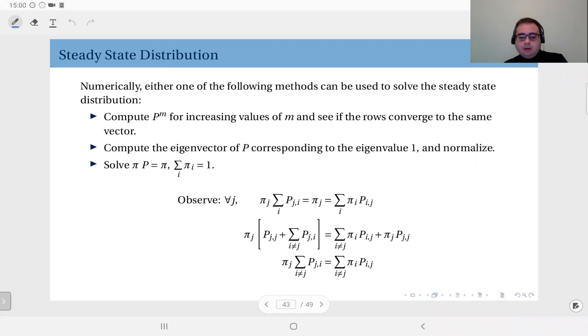If your Markov chain is ergodic, all rows should converge to the same vector, and that will give you the steady state distribution.